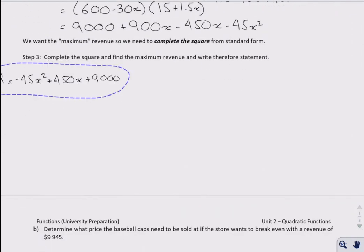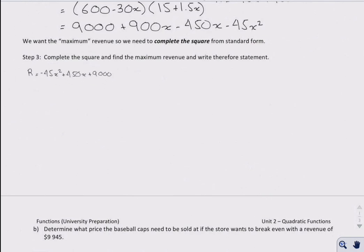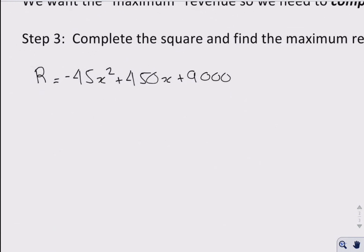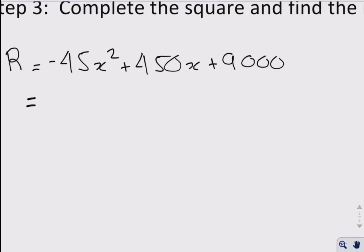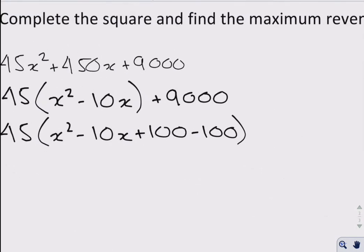and I will paste it over here. So there's my revenue. Maybe shrink it a little bit as well. I'm going to need the space and go back to my pencil. So I'm completing the square of a complex trinomial, so in this case I want to divide out negative 45 from the first two terms. Okay, 450 divided by that's going to give me negative 10 plus 9000, and that will give me in turn x squared minus 10x plus 100 minus 100, and I will leave it to you to decide where I got that from.